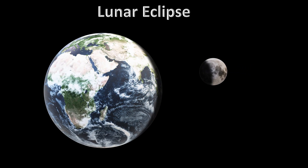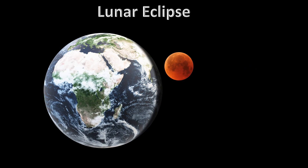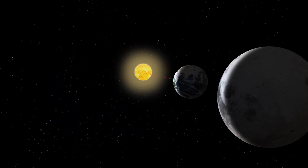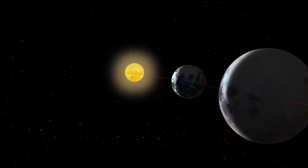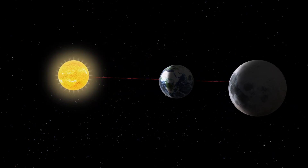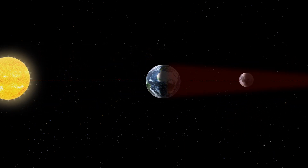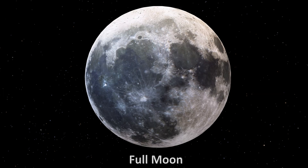A lunar eclipse occurs when the Moon partially or completely moves into the Earth's shadow. This can occur only when the Sun, the Earth and the Moon are exactly or very closely aligned, with the Earth between the other two, and only on the night of a full moon.